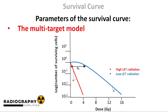Let's talk about the parameters in this model. First, we have the slopes. The curve has an initial slope, D1, which represents cell death due to one strike of radiation — a phenomenon known as single-event killing. The curve also has a final slope, D0, which represents cell death due to multiple strikes of radiation, known as multiple-event killing. Another way to look at it: both slopes are the doses of radiation required to reduce the fraction of surviving cells to 37 percent of their original values.